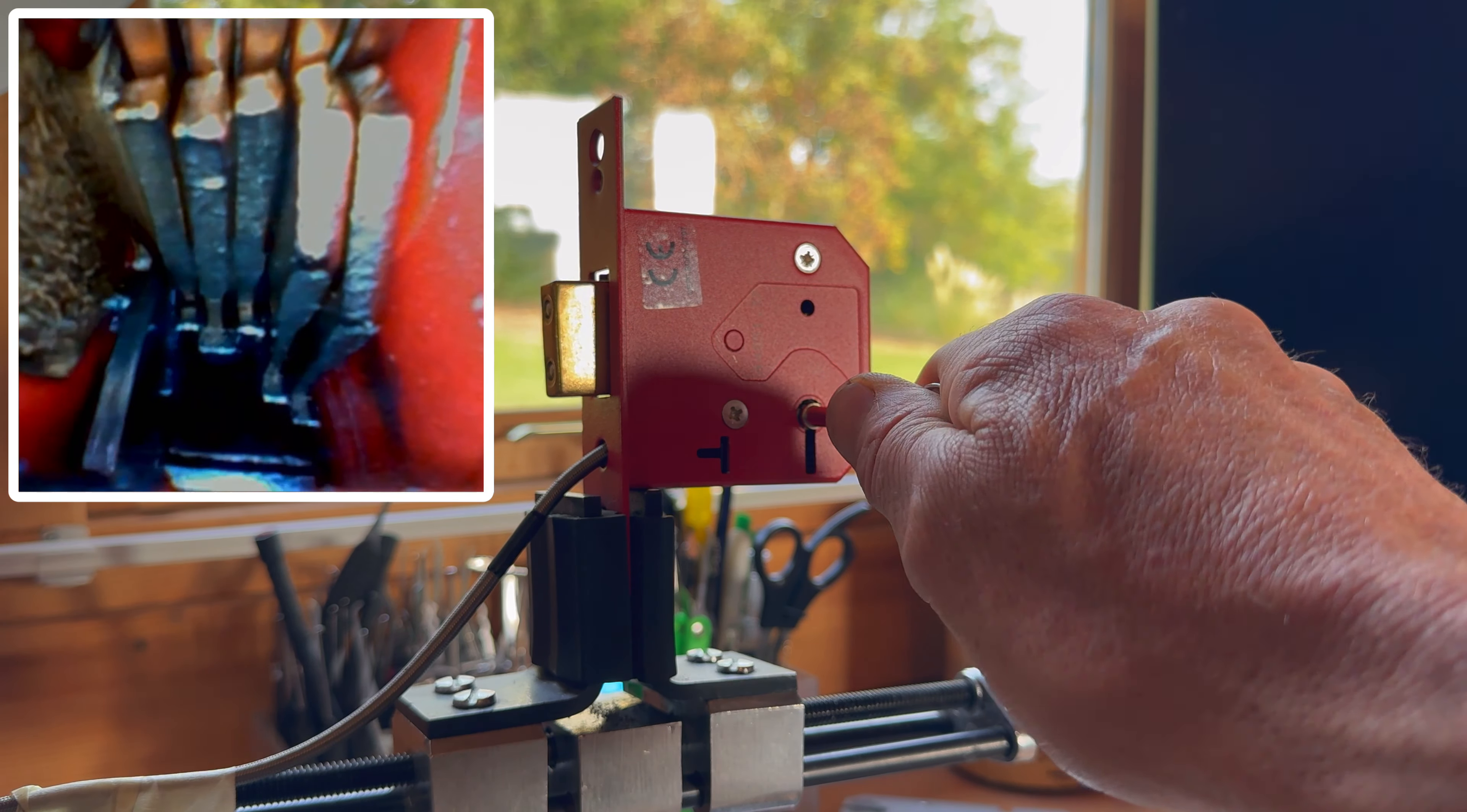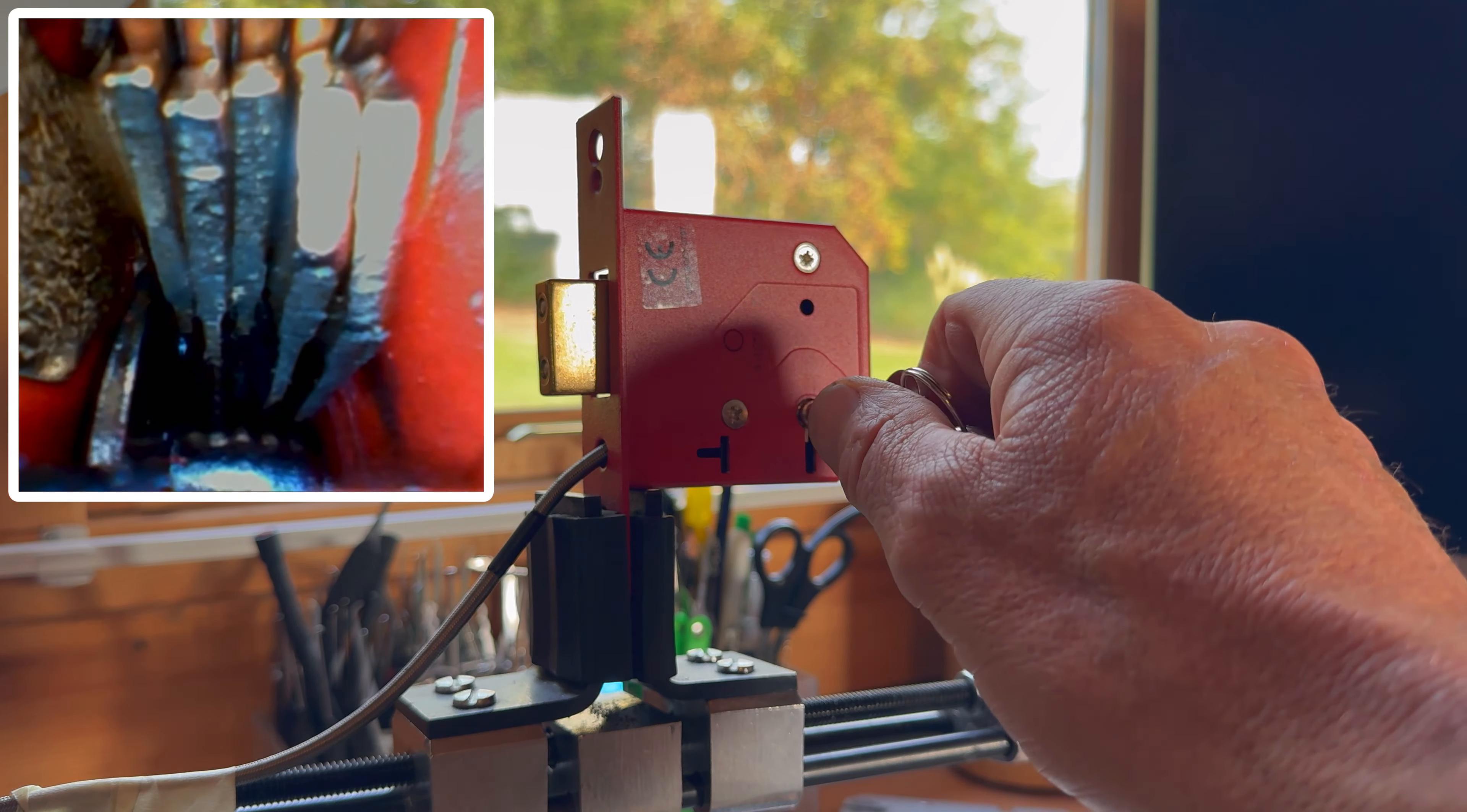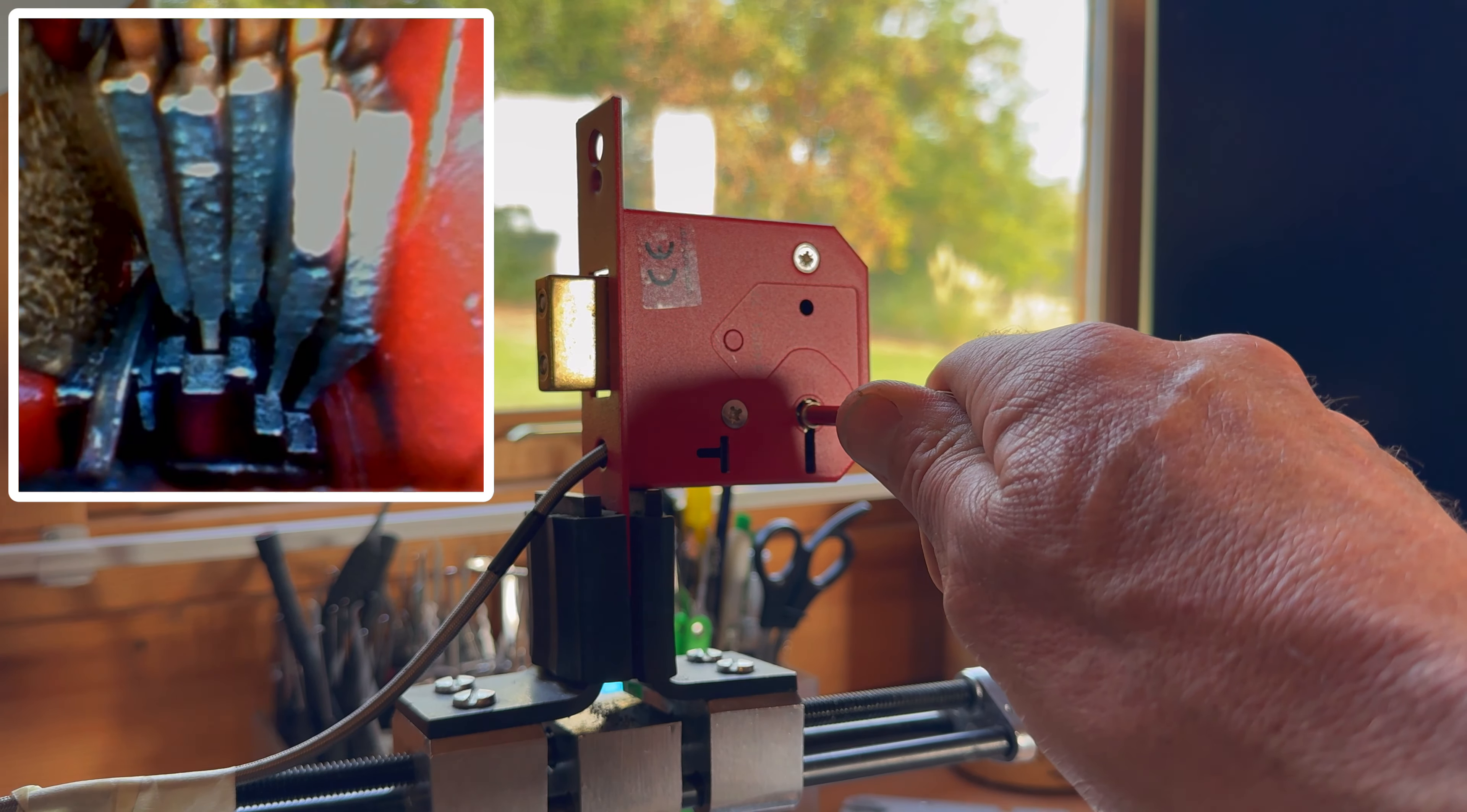This operates the bellies of the levers and pulls the bolt back. What you'll notice is the profile on the key is matched by the profile on the bottom of those levers.